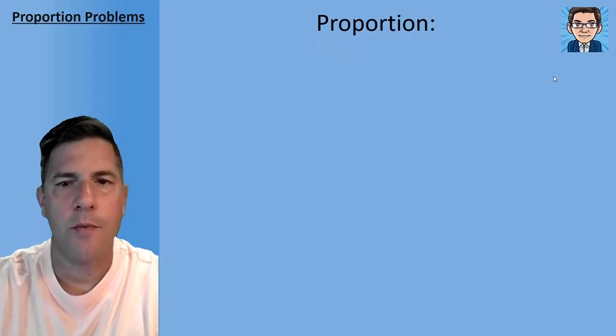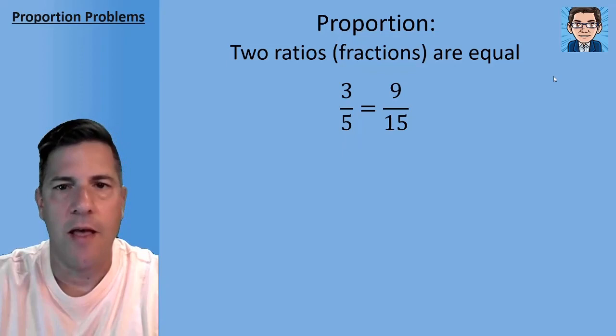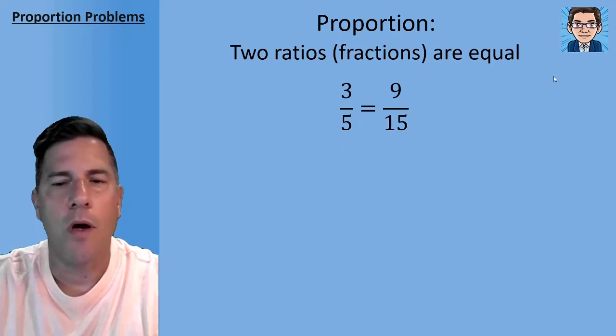Okay, so what is a proportion? A proportion is just two ratios or fractions that are equal to each other. So 3 fifths equals 9 over 15. That's a proportion. Two fractions are equal. You can see that the fraction on the right is just three times on the numerator and three times on the denominator.